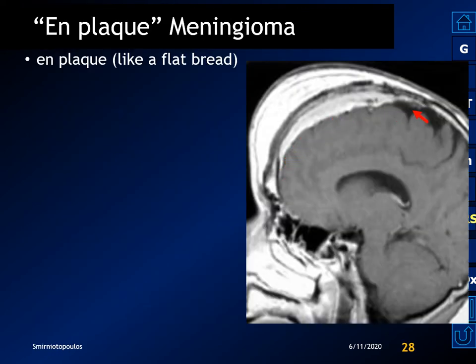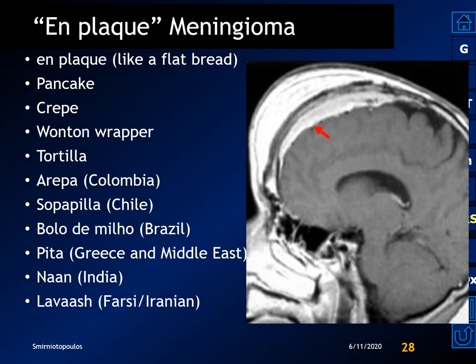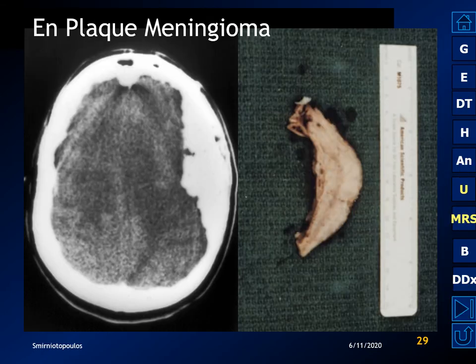The en plaque meningioma grows against the inner table of the skull as a flat or carpet-like thickening — like a flatbread. Every culture has some kind of flatbread: pancake, crepe, wonton, tortilla, arepa, sopapilla, pita, naan, lavash — you can pick the analogy you like best. The en plaque meningioma is often difficult to distinguish from the underlying bone on CT because both are going to be hyperattenuating.